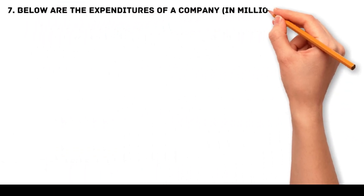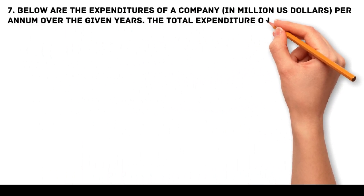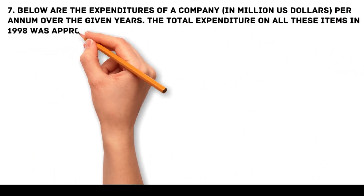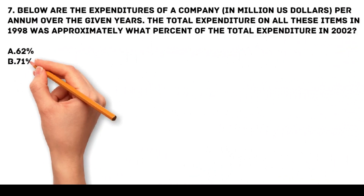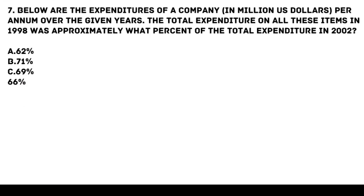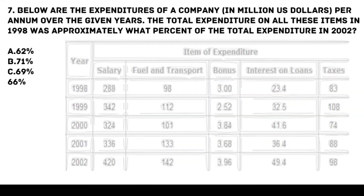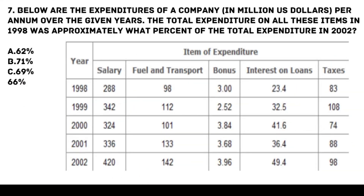Problem 7: Below are the expenditures of a company in million US dollars per annum over the given years. The total expenditure on all items in 1998 was approximately what percent of the total expenditure in 2002? Options: a. 62%, b. 71%, c. 69%, d. 66%.